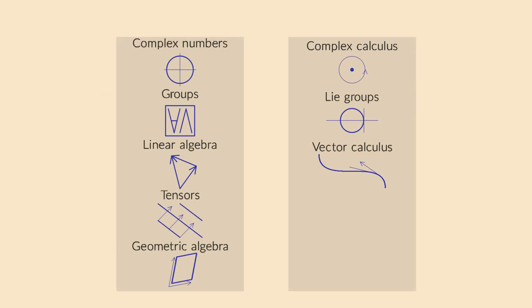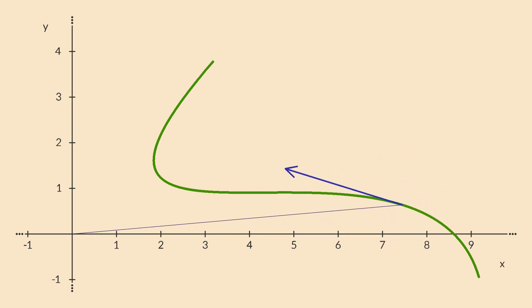In vector calculus, we look at functions that return vectors as output. The derivative of such a function tells us how fast an object travels along its trajectory, which is very useful for classical mechanics.